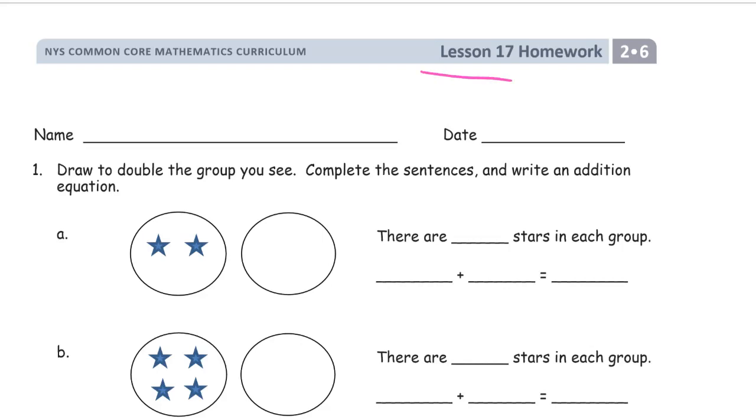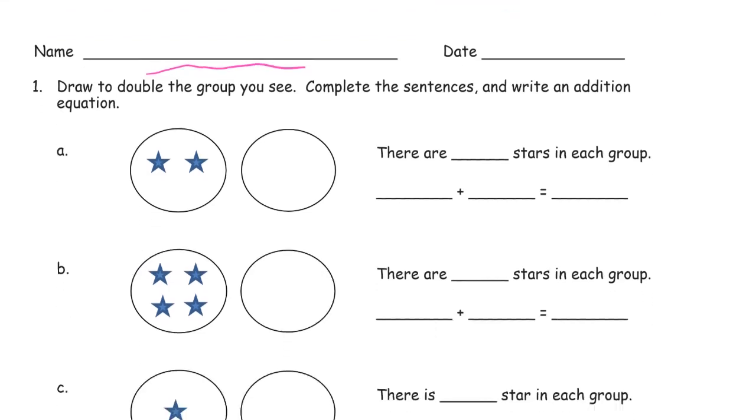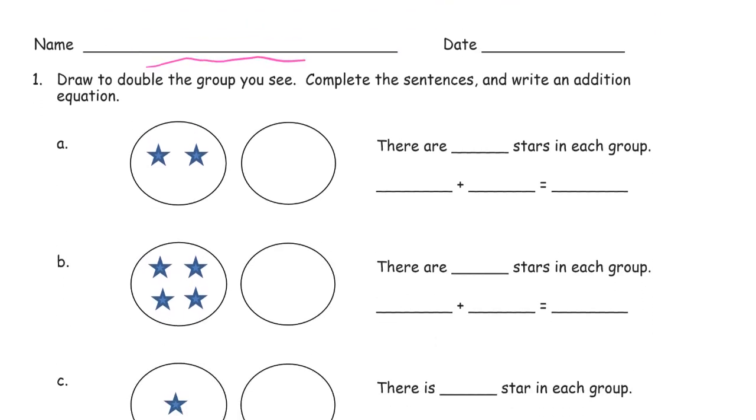Welcome to the homework for Lesson 17, Module 6 of 2nd Grade. Get your name on here first, please. That way you won't have to worry about remembering it at the end. Draw to double the group you see. Complete the sentences and write an addition equation.